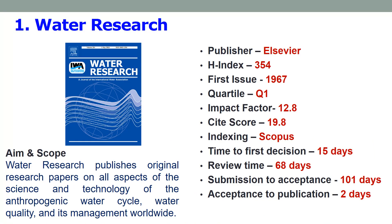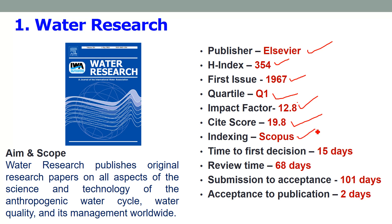Let us start with the first journal: Water Research, which is published by Elsevier. The H-index of the journal is 354. The journal was first launched in 1967. It is a Q1 quartile journal and the impact factor is 12.8, whereas the site score is 19.8. It is a Scopus indexed journal. When you submit a paper, you will get the first decision on your manuscript within 15 days and the maximum review time is 68 days, that is almost 2 months.